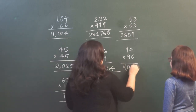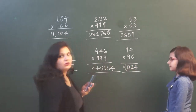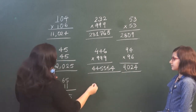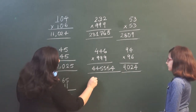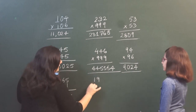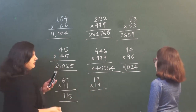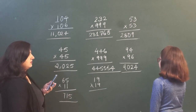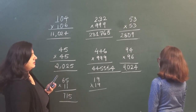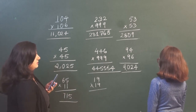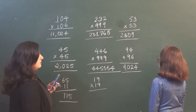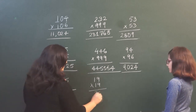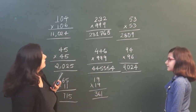The answer is 9024. Yes, that's the correct answer — 9024. Very good. Now just a small one — you tell me the square of 19, that is 19 × 19. The answer is 361. Yes, 361, that's the correct answer. Very good.